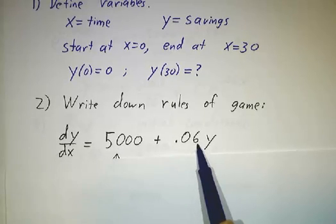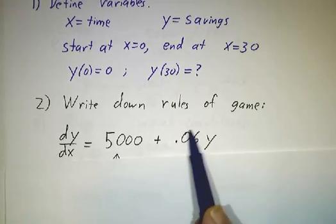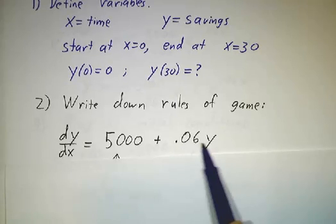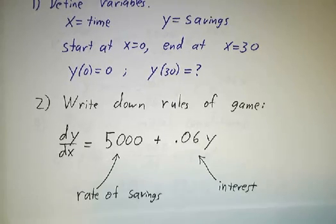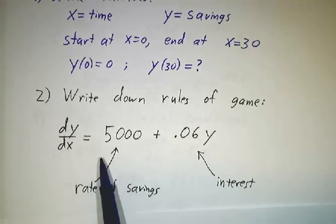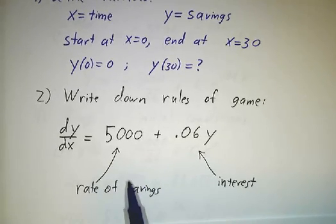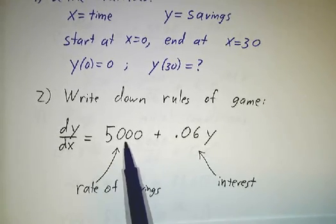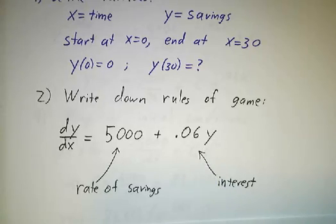But at the same time, the money that's already in the bank is earning interest at a rate of 0.06 times what's already there. So dy/dx is a sum of two terms, one which is the rate at which she's putting money in and one which is the rate at which she's earning interest.